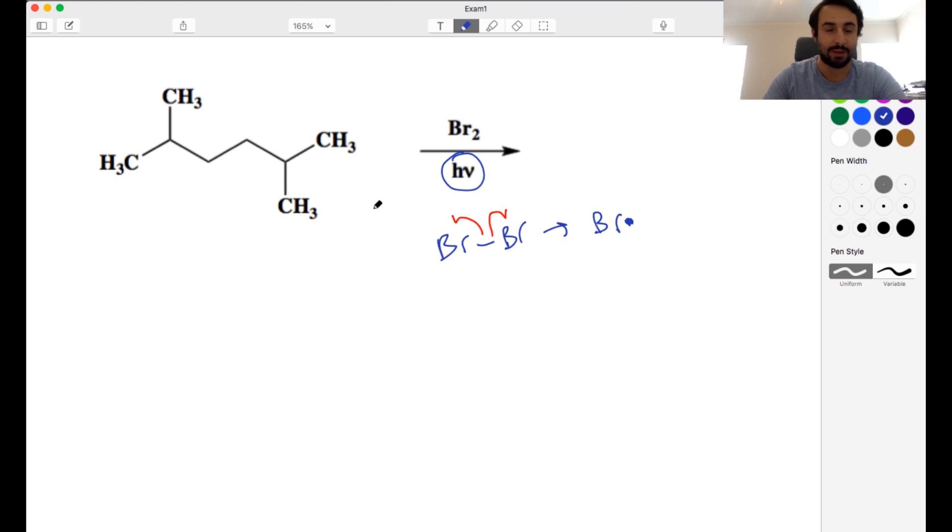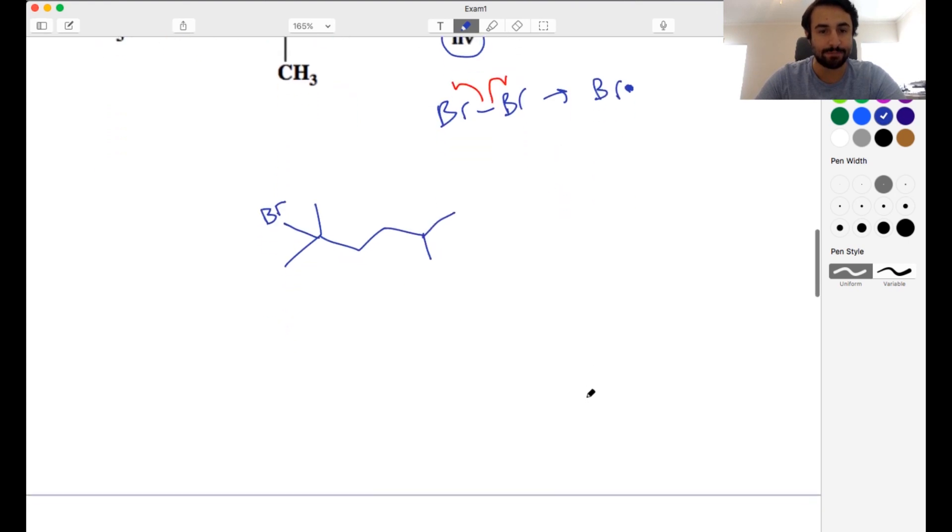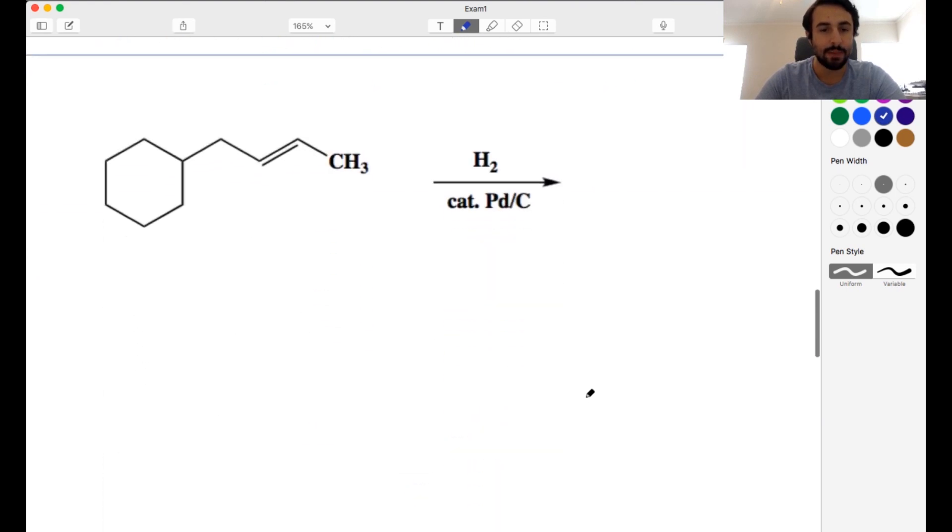It is going to attack specifically the most substituted location on the molecule because that will provide the most stable radical intermediate. So we know that whenever we do radical bromination, we always get the most substituted alkyl bromide that we can. And so because we have two tertiary carbons, we can just pick either of them. Let's just put the Br here. We're going to add that bromine atom right there, and that's going to be the answer for that one.